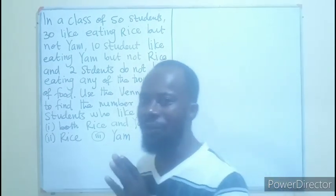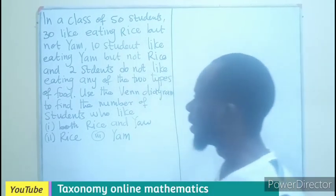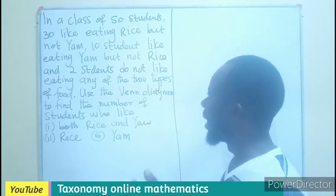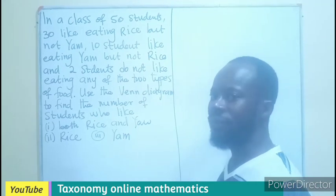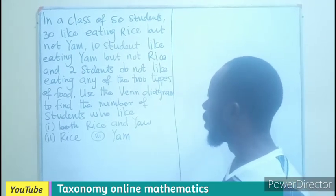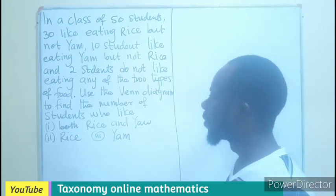We are having in a class of 50 students, 30 like eating rice but not yam. 10 students also like eating yam but not rice. Two students do not like any of the two types of food.